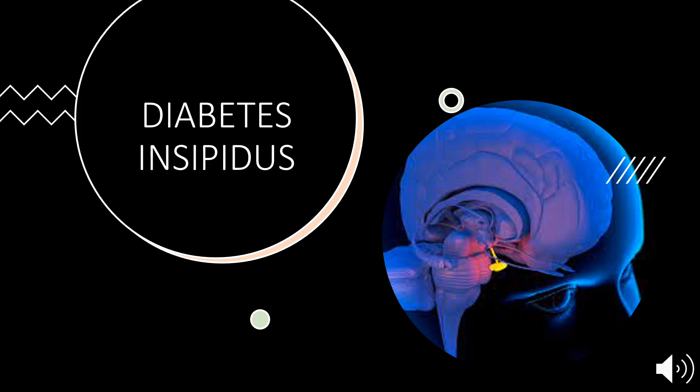Starting with diabetes insipidus — what is it? Basically, it's a condition in which the kidneys are unable to concentrate urine. This causes the body to make a lot of diluted urine that is insipid, meaning colorless and odorless. It also causes the person to feel extremely thirsty. The amount a person will urinate varies between 3 liters to 20 liters per day, leading to an imbalance of fluids in the body.